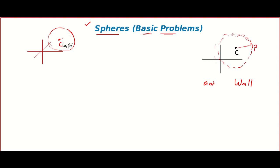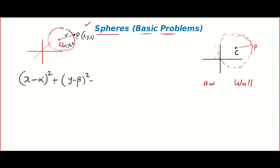Using the same logic, suppose the center is (α, β, γ), the radius is r, and the random point on the sphere is (x, y, z). It is easy to see that the sphere is given by: (x − α)² + (y − β)² + (z − γ)² = r².